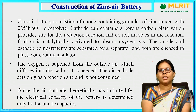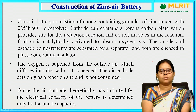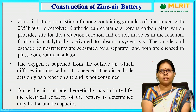Construction of the zinc-air battery: The three main components are the anode, cathode, and electrolyte. The anode is zinc granules. The cathode is oxygen coming from air, supported by a porous carbon plate. The electrolyte material is 20% sodium hydroxide (NaOH) solution. A separator is used to prevent mixing of the anodic and cathodic materials.